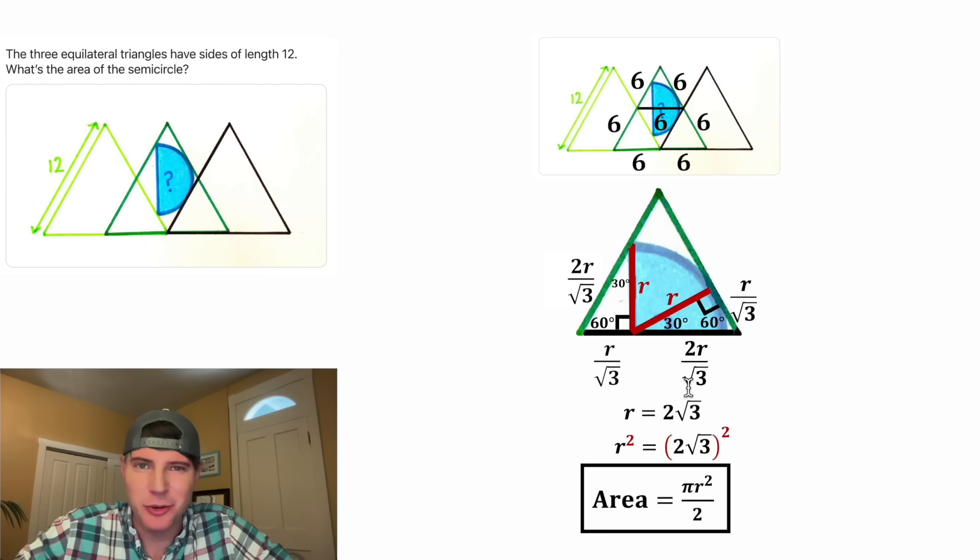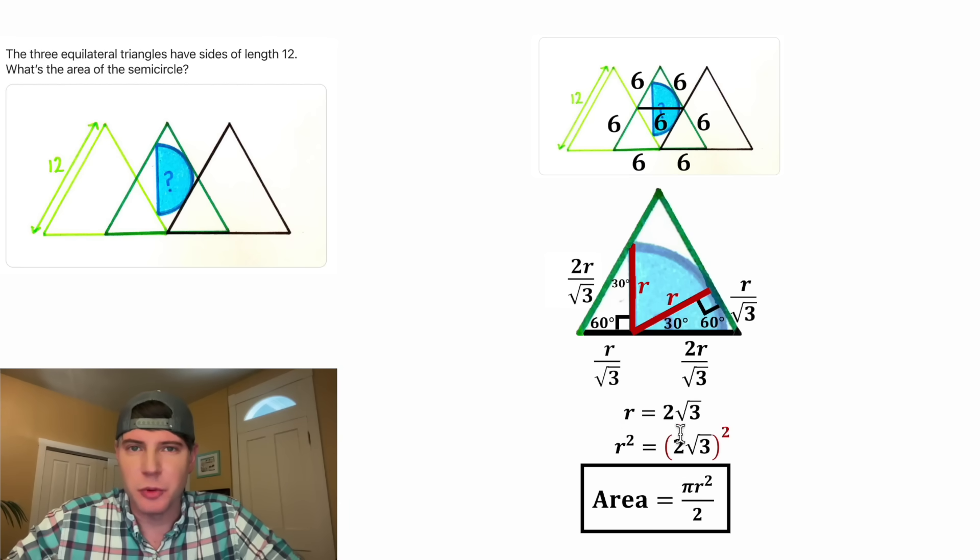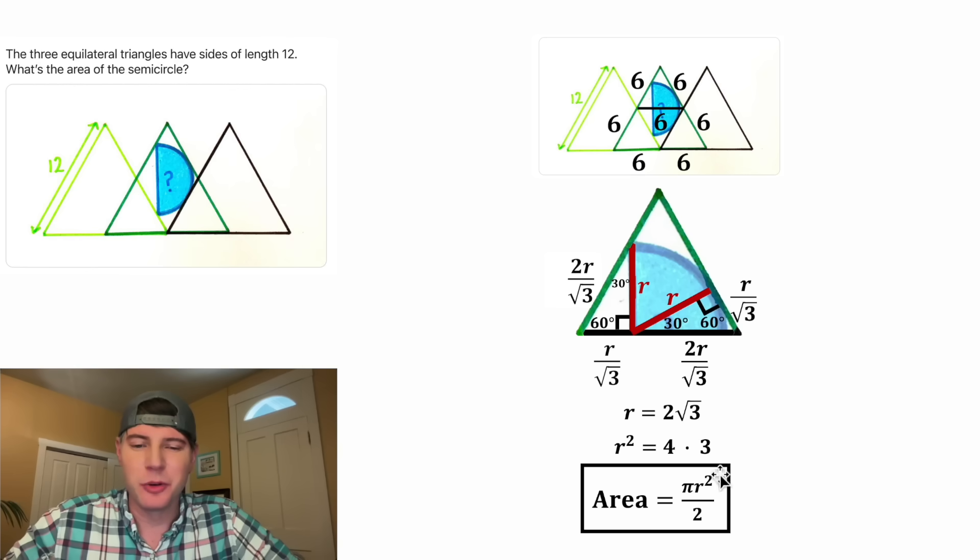From here, we can square both sides of the equation. On the left hand side, we'll have r². And on the right hand side, the square can go to each of these, giving us 2² · (√3)². 2² is equal to 4, and (√3)² is equal to 3. 4 times 3 is equal to 12. And now we have r².